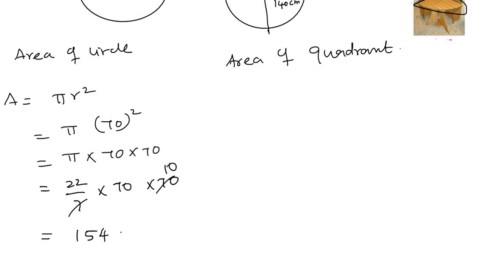Next one is area of the quadrant. Area equals 1 by 4 π r². 1 by 4, π value is 22 by 7, r value is 140, so radius 140 into 140. So cancel.